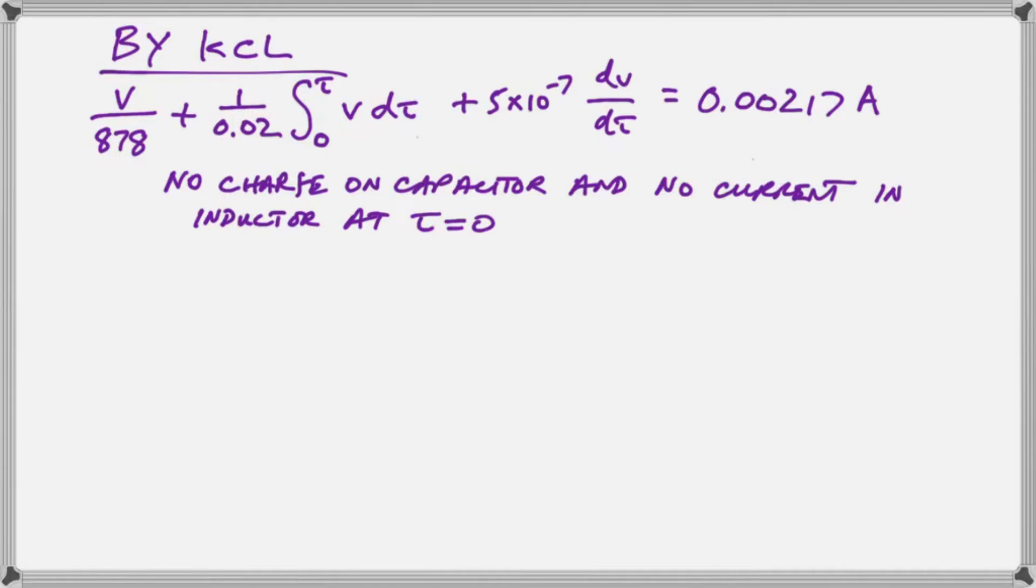The first thing we need to do now is to differentiate that equation above. And when we do that we see that we have a second derivative for the capacitor. We have a first derivative for the resistor. And when we differentiate the integral we just end up with V over 0.02 for the capacitor. So that's pretty standard calculus operation to differentiate throughout.